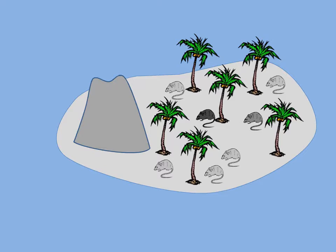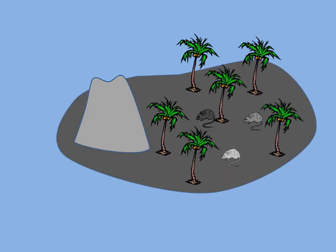But what if the environment changed, as all environments do? The volcano erupts and spews hot lava everywhere! Most of the mice did not survive, as they were not adapted for searing hot lava. But a few climbed trees and came back down to a very different environment — the lava that covered the island cooled to dark-colored rock. Now the predators can more easily see the mice with light fur, so the mice with darker fur are better adapted to the new environment. Populations evolve as a result of selective pressure from changes in their environment, and natural selection acts on individuals by favoring those that have traits that allow them to survive and reproduce.